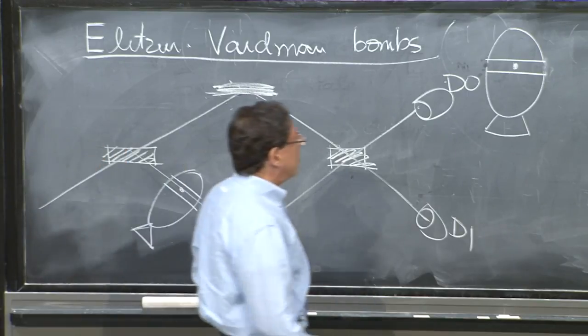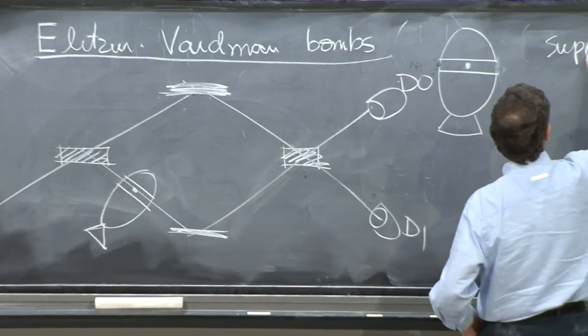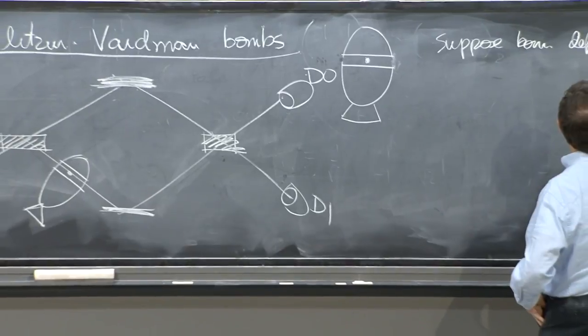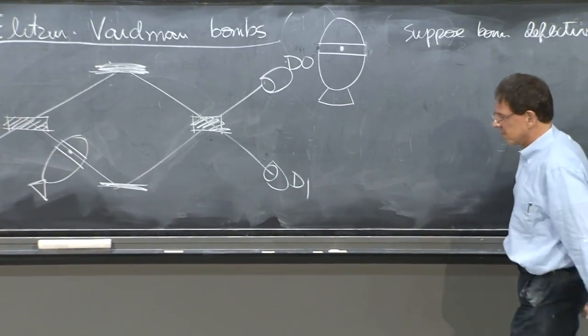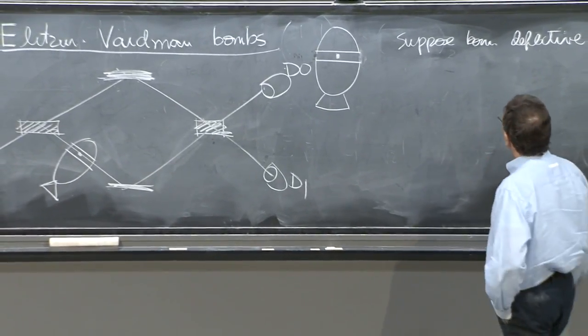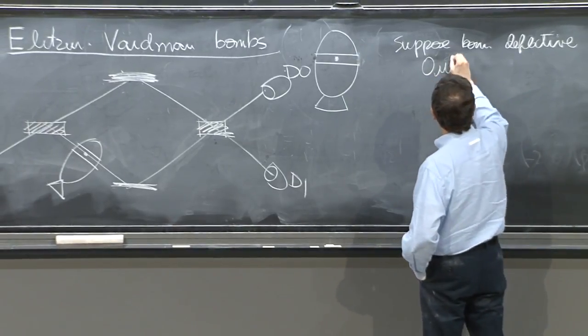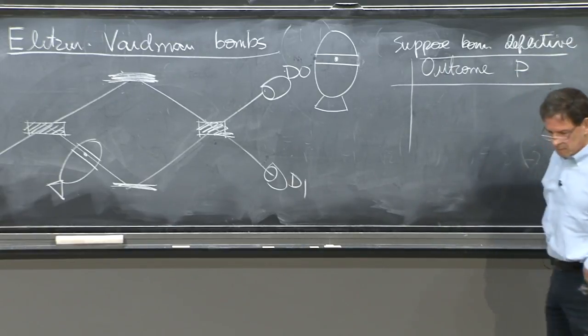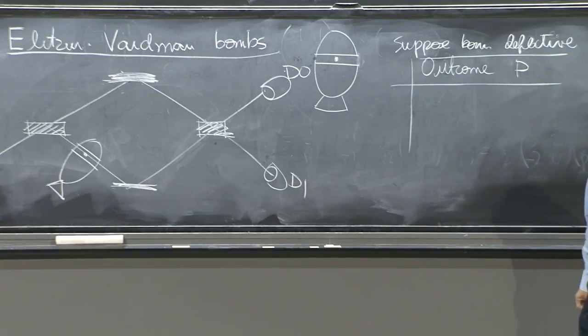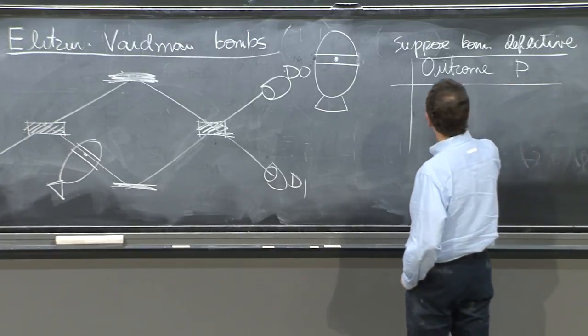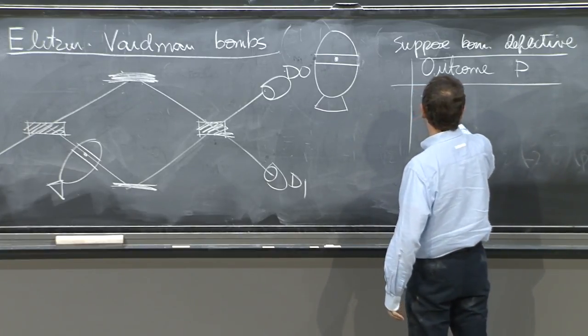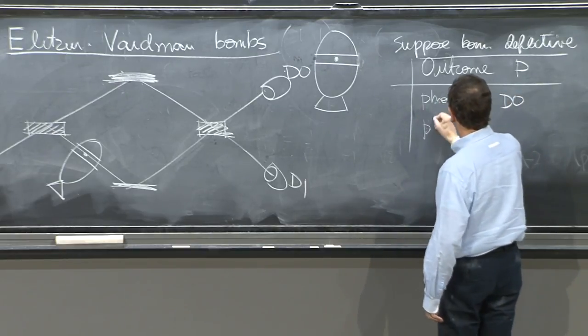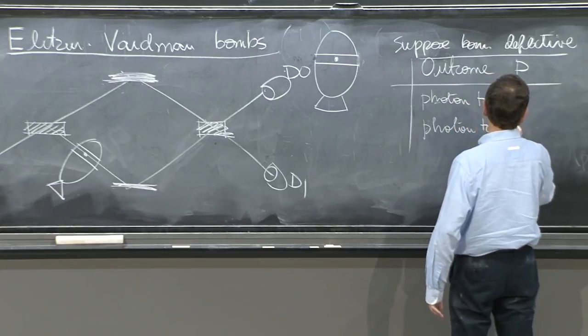Suppose the bomb is defective. Bomb is defective. So what are the possible outcomes? Outcome and probability. Photon goes to D0, photon to D1.